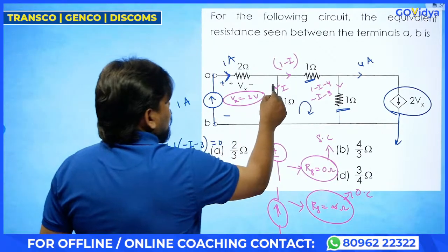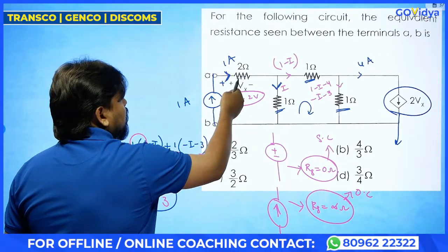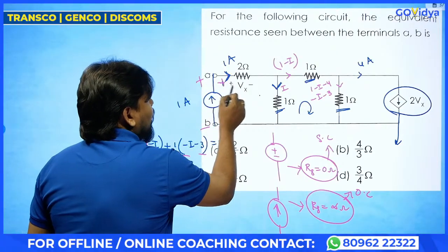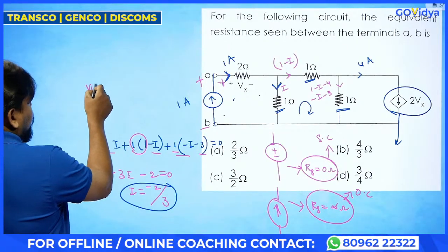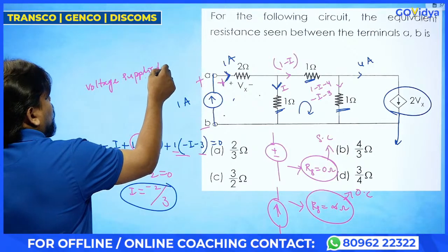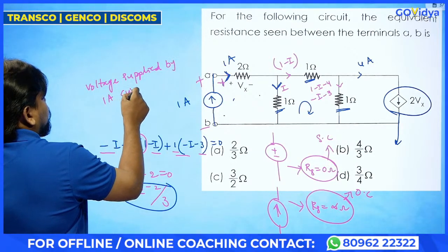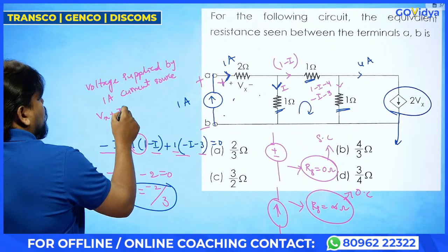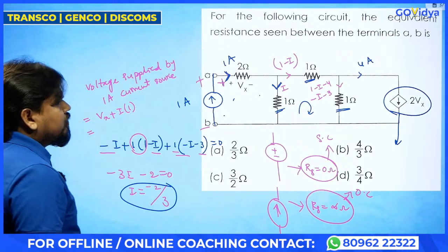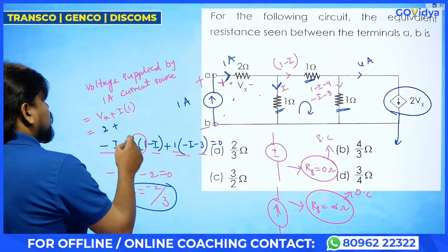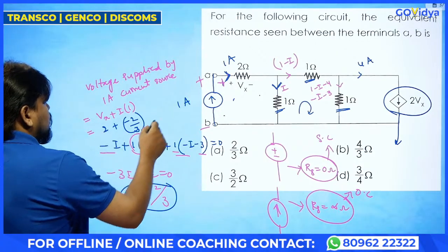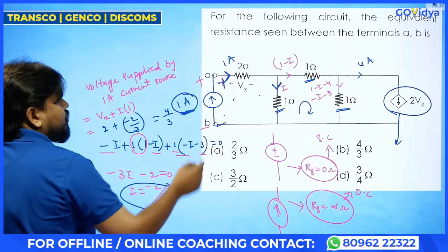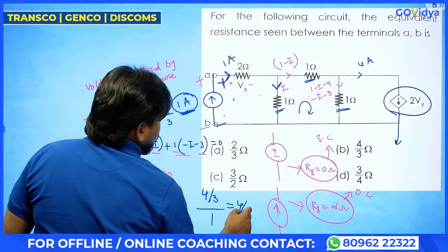So current here is minus 2 by 3. So what do you need actually? You need to calculate the voltage supplied by this current source. So that will be Vx plus I into 1 — this will be the total voltage. Vx is nothing but 2 plus I value is minus 2 by 3. So 6 minus 2 is 4 by 3. So 4 by 3 will be the voltage across these two terminals. Current we have only given as 1 ampere. So it is nothing but 4 by 3 divided by 1, which is 4 by 3 ohms.